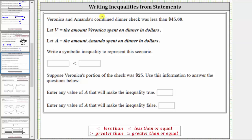Veronica and Amanda's combined dinner check was less than $45.69. Let V equal the amount Veronica spent on dinner in dollars, and let A equal the amount Amanda spent on dinner in dollars. Write an inequality to represent this scenario.